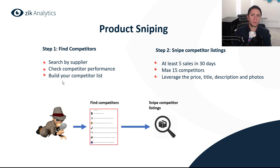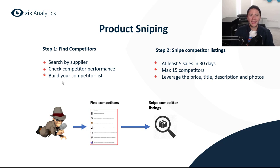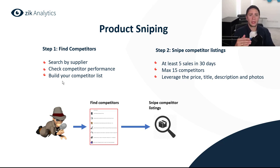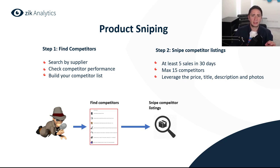When you focus on product sniping, you should have a competitor list because sellers update their products on probably a daily basis. If you have a list of 100 or 200 sellers, you can manage an organized list where you know when was the last time you checked each seller. This is very recommended because it will be very efficient working this way.